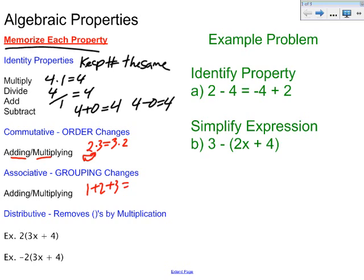The next one is associative property. I want you to remember groups or parentheses change. So in this case, if you notice, the order is the same, 1, 2, 3, 1, 2, 3. But the groupings, in the first side it's 1 and 2 is grouped. In the second side it's 2 and 3. Again, that only works for adding and multiplying just like the commutative property.